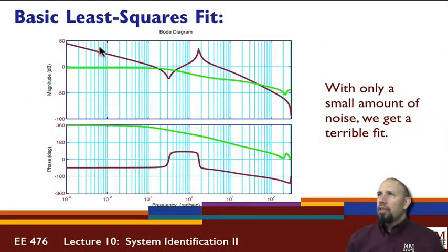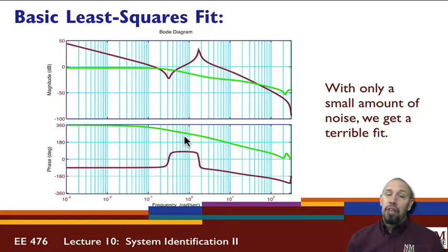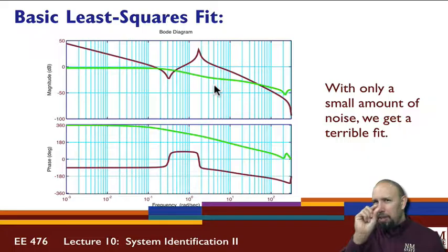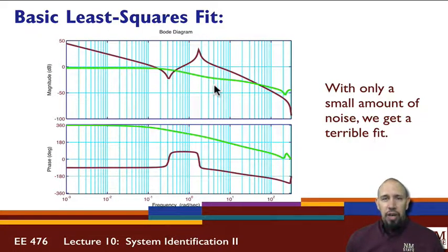Here are the results. The actual system has this frequency response. The fit we get with just the standard least squares (green curve) does not do very well at all. It misses the notch, it misses the resonance — a terrible fit even with just a tiny bit of noise. This shows that the standard least squares system identification approach is not very robust to noise.